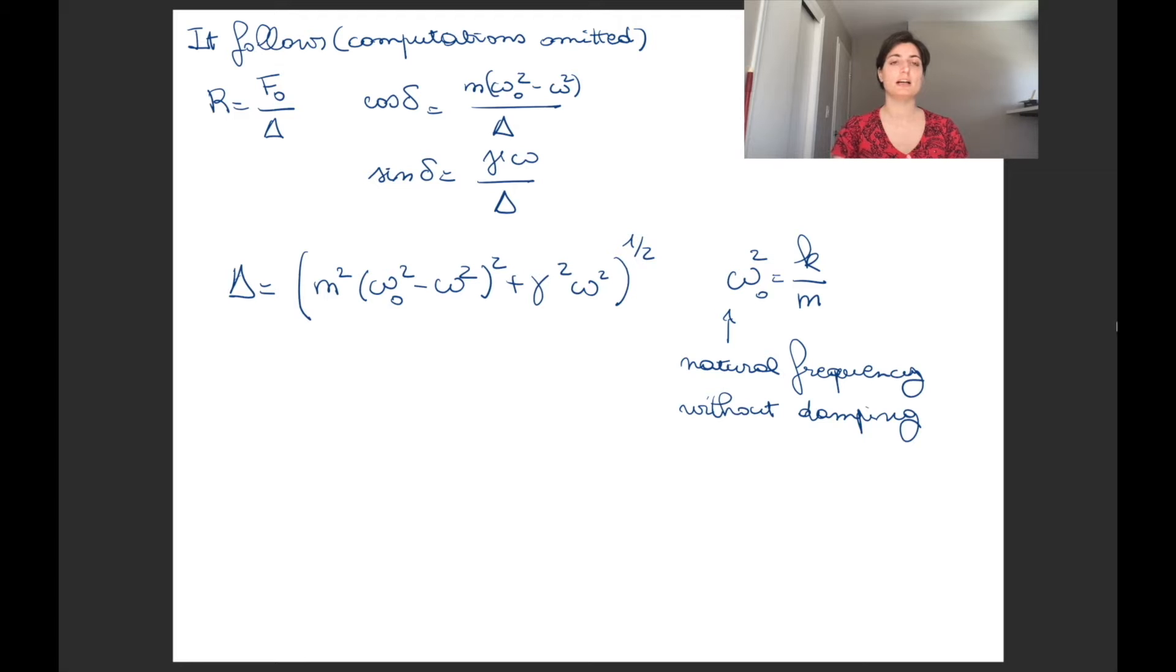If you do the calculations, and the calculations are omitted in this case, you can work them on your own or not. You'll notice that the amplitude of your steady state solution, your forced response, is something that depends on F0, the force of your forcing term, the amplitude of your forcing term, divided by capital delta. And the cosine of small delta and the sine of delta have also formulas depending on the terms of your ODE.